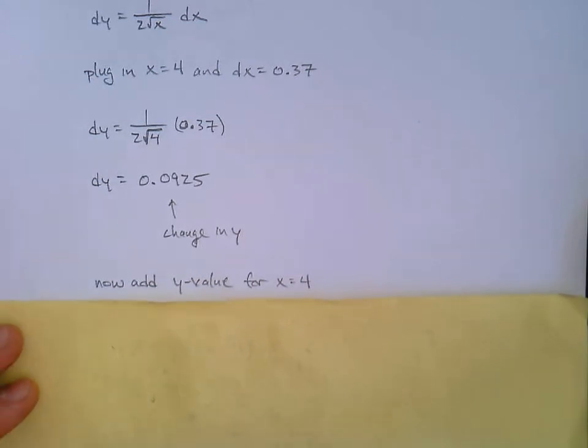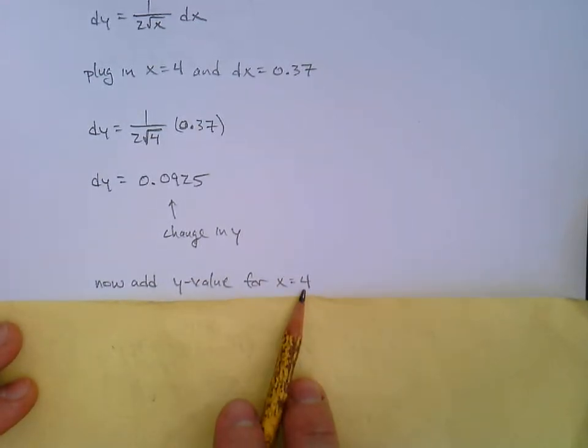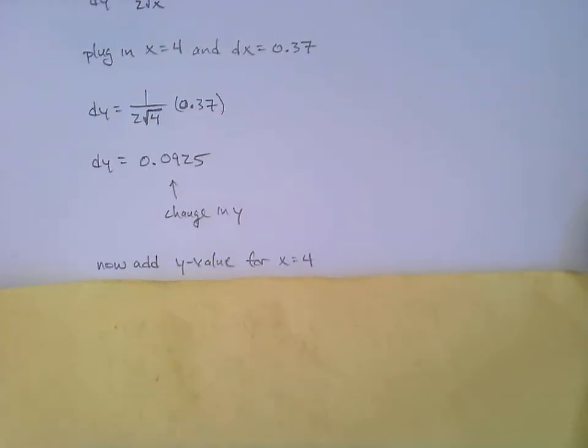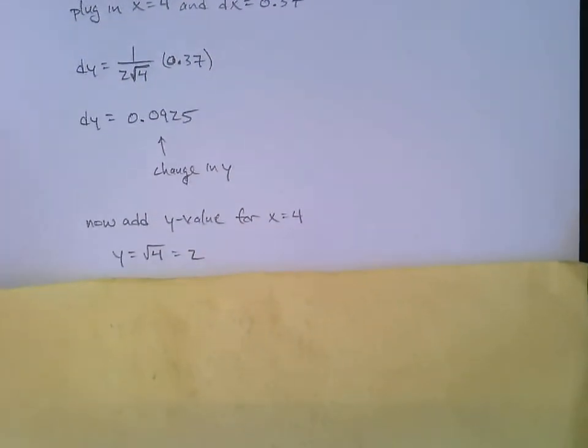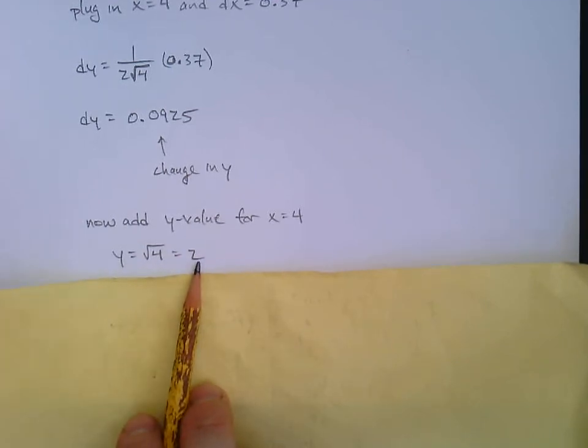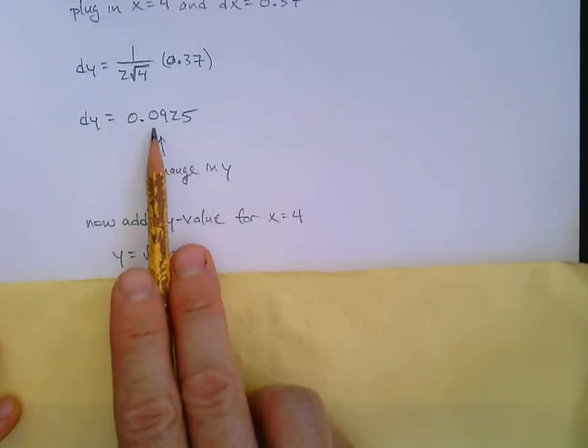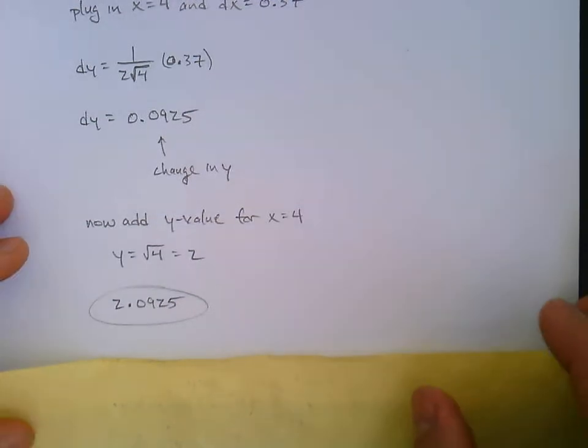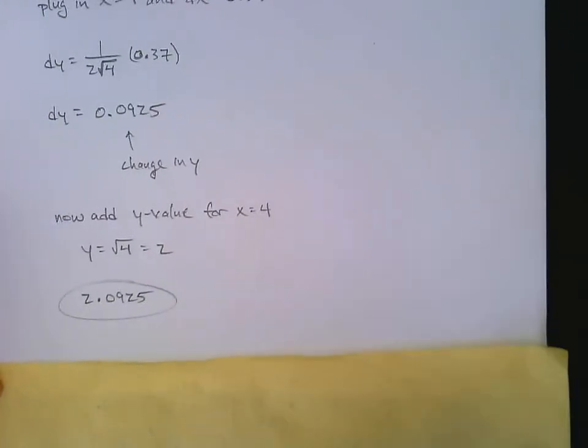So to get to the final answer, we have to add the y value of our starting position at x equals 4. So we go back to the function. It was square root x. So what was the y value there? Well, 2, of course. So we take the 2, add it on to this, and now we got our answer 2.0925.